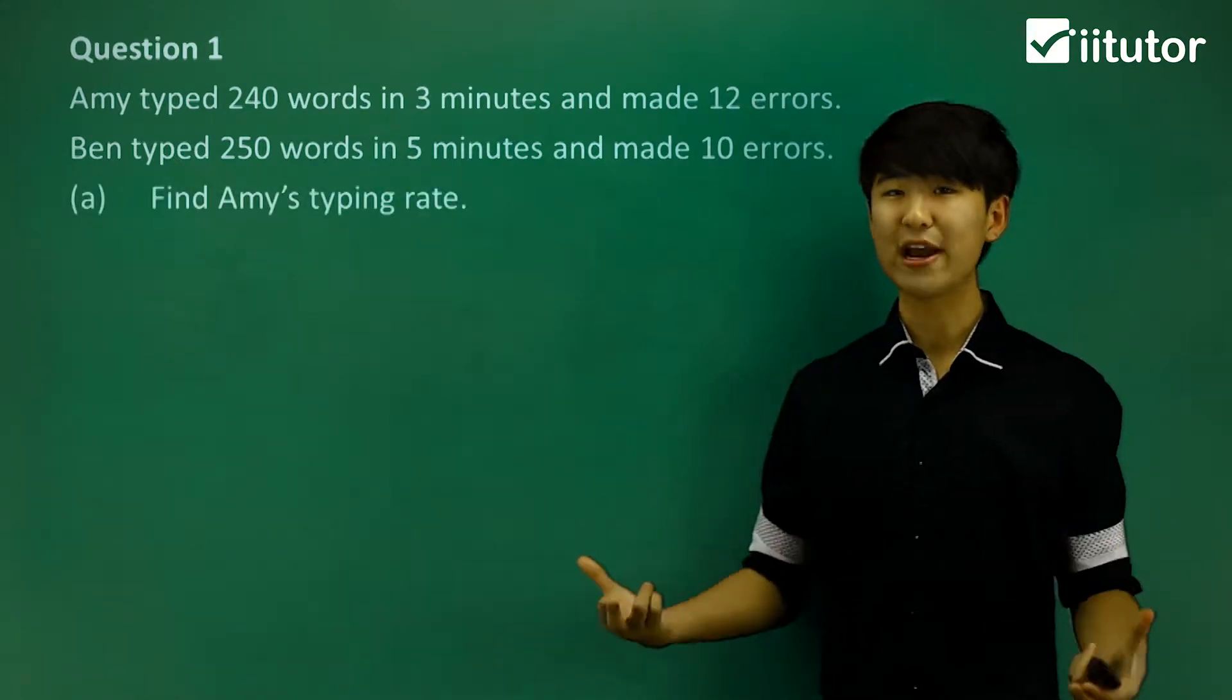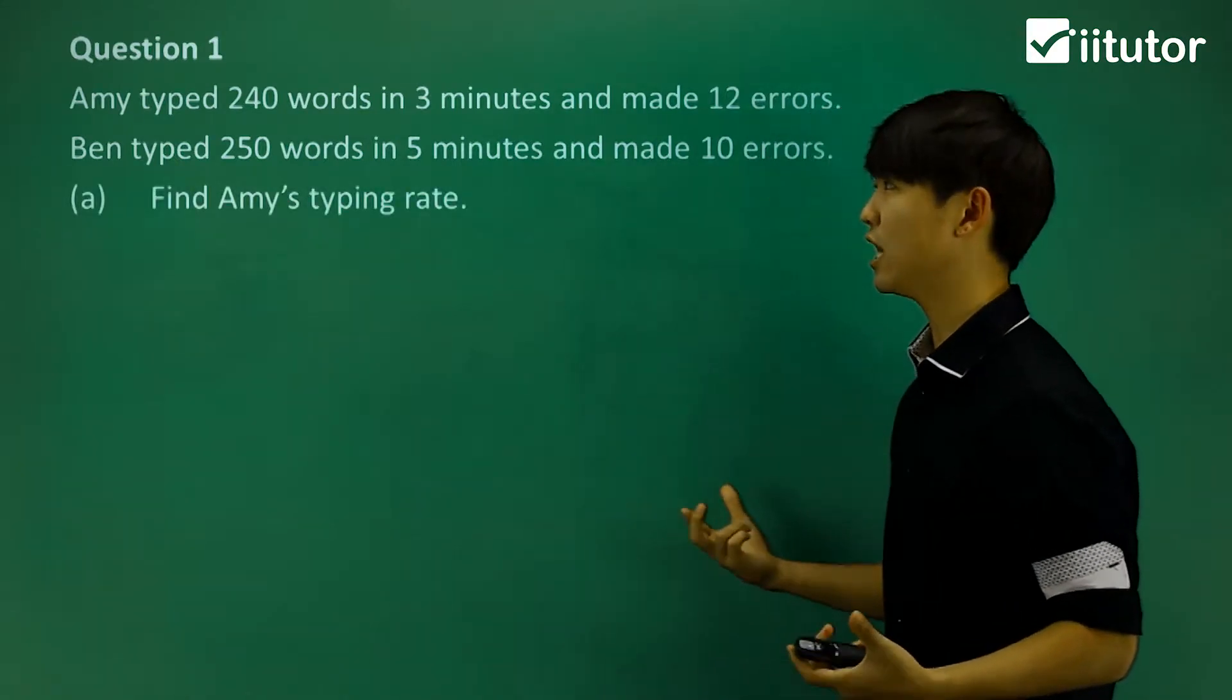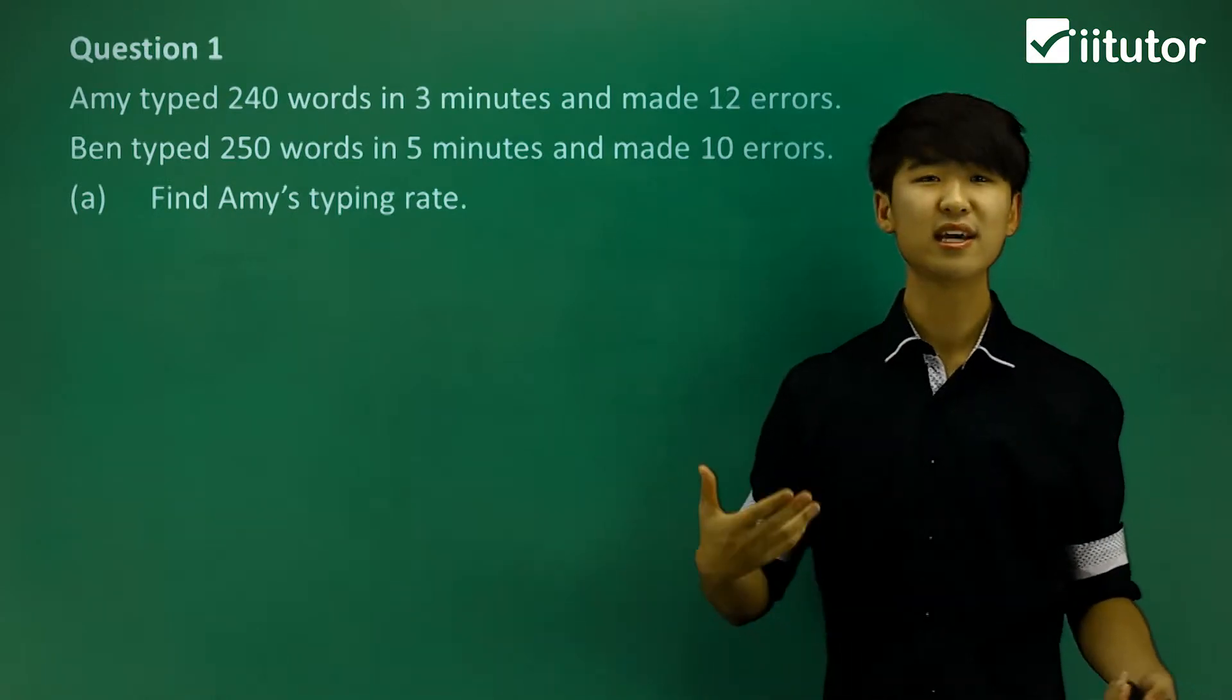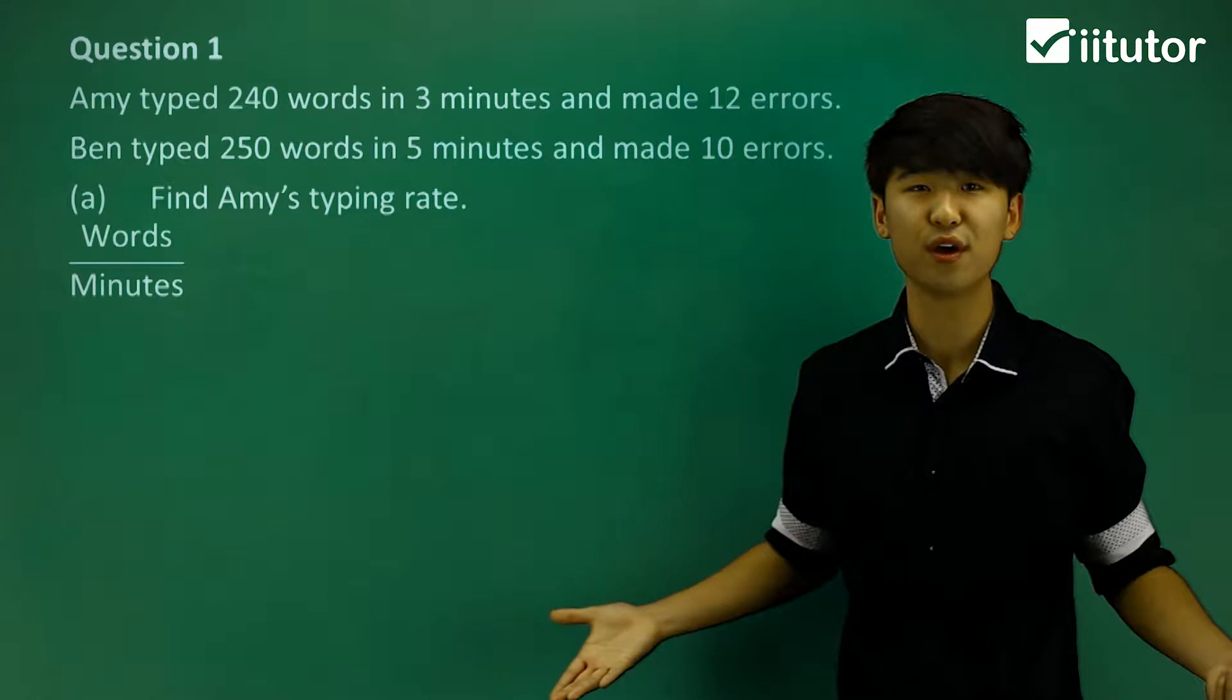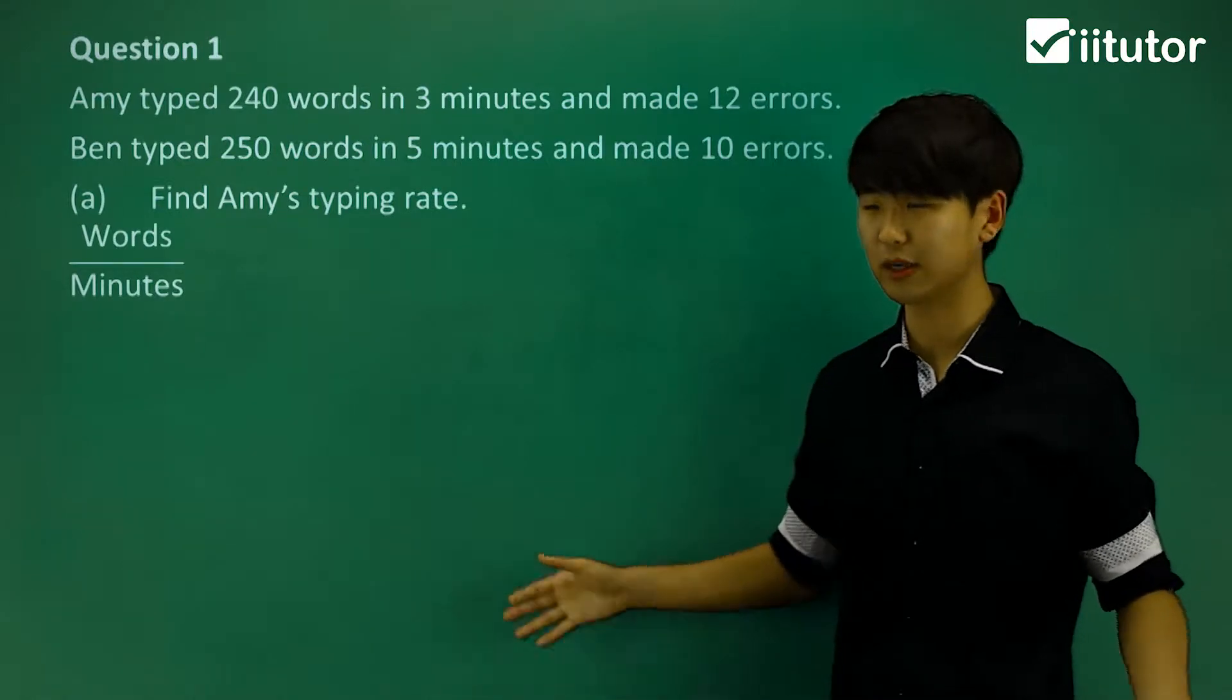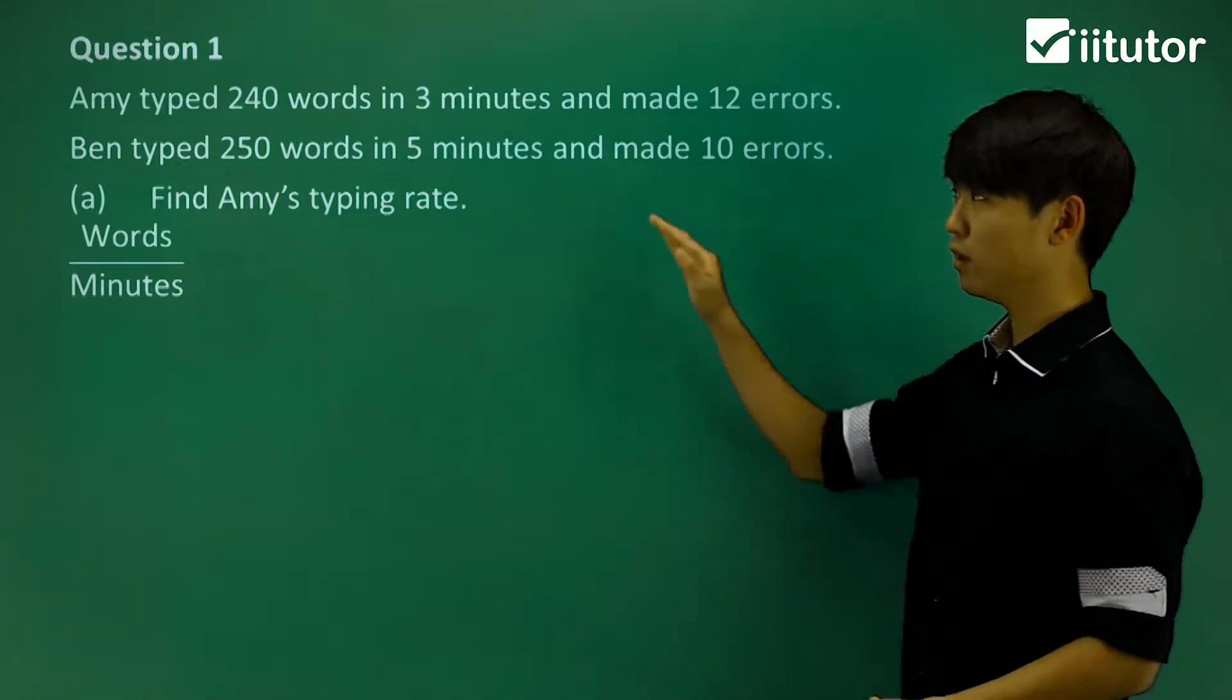Find Amy's typing rate. So typing rate, what that means is, well, how many words did she type in some sort of time? So words over minutes is going to be the rate that we have. Let's look at Amy.